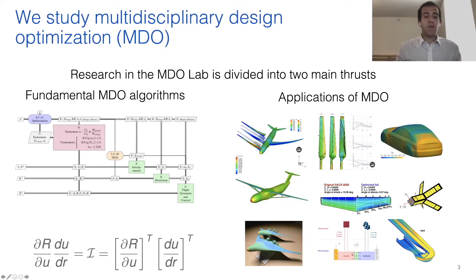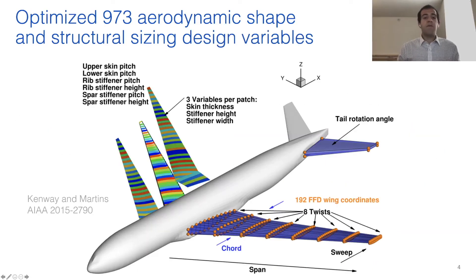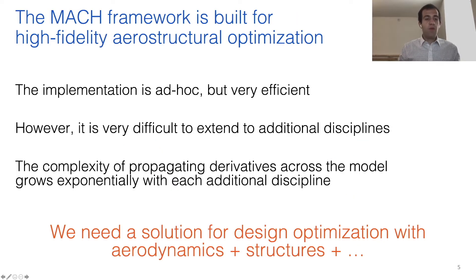To give you a bit of background, I'm from the MDO lab at University of Michigan. Research in the MDO lab is divided into two main thrusts: developing fundamental MDO algorithms and applying these to MDO applications. In the past, we've done a lot of work on aerostructural design optimization — here you can see an example where we optimize the design of the common research model using about 1,000 design variables. We've been using the MACH framework to perform these high-fidelity design optimizations.